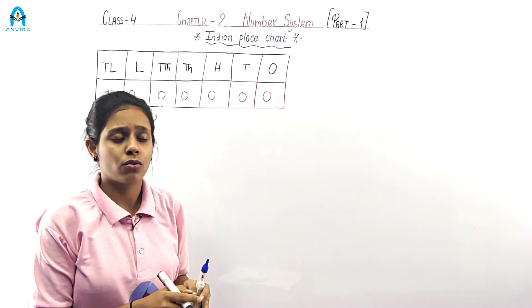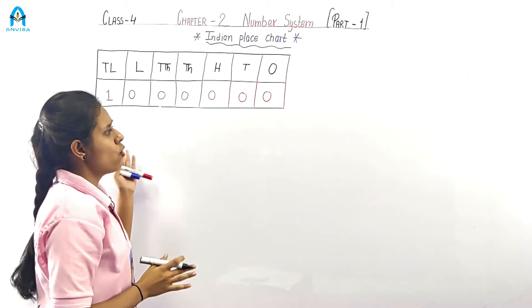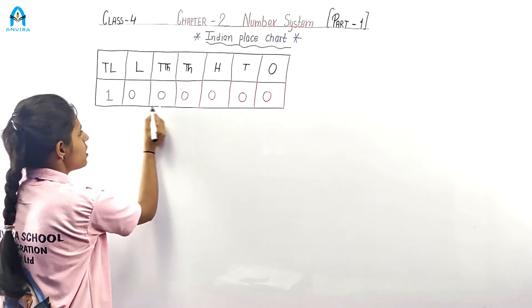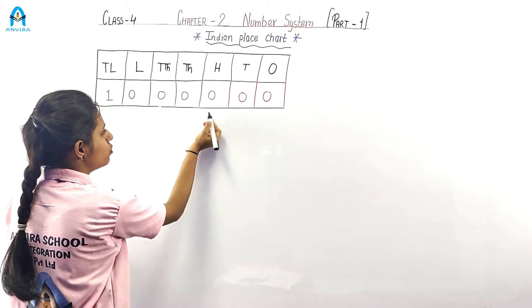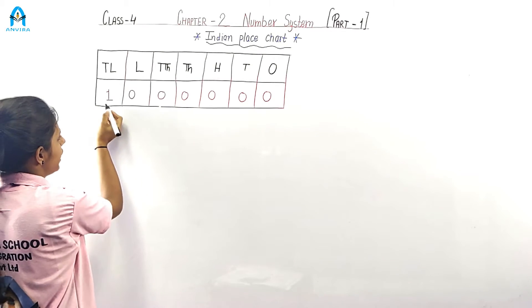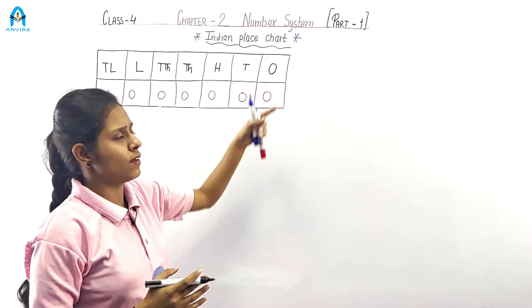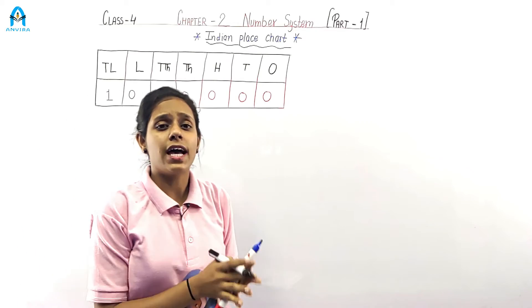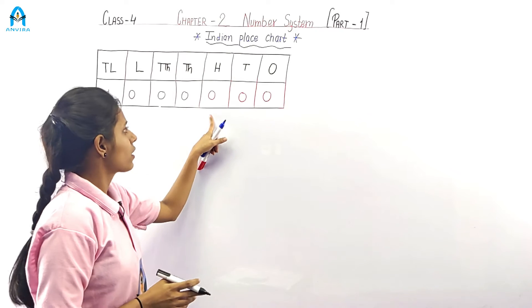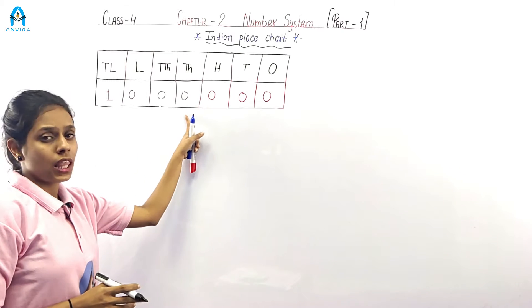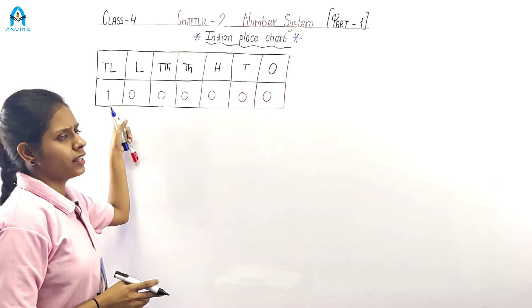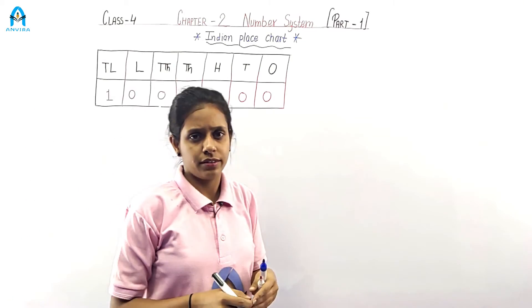Here we have the place value of a 7-digit number. One, two, three, four, five, six, seven digits. Starting from the right: ones, tens, hundreds, thousands, ten thousands, lakh, and then ten lakh.